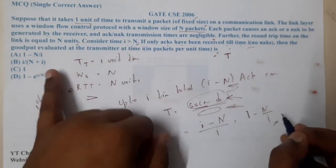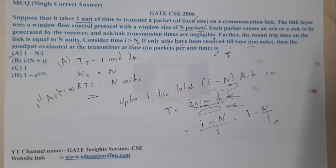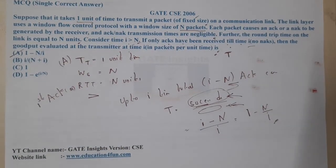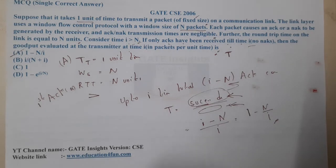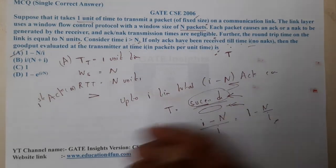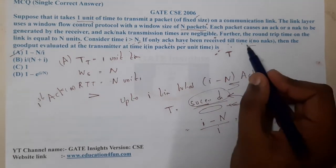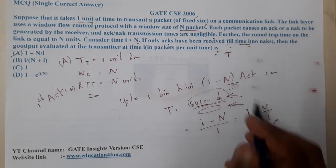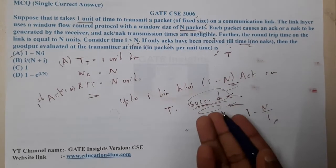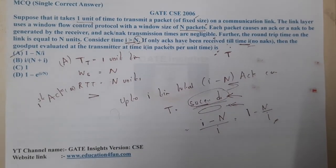That gives us option A. It is a confusing type of question because everything is given in text with no numerical values. The throughput is the number of successful deliveries over total time. The total time is i, and the number of deliveries depends on N, because N units are taken before the first acknowledgement arrives.